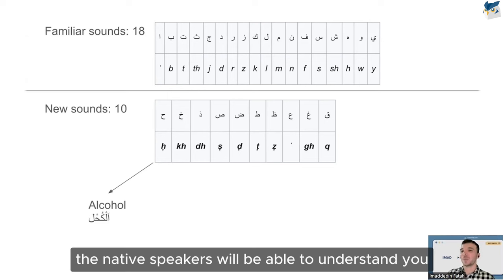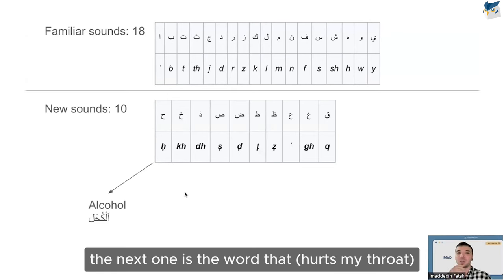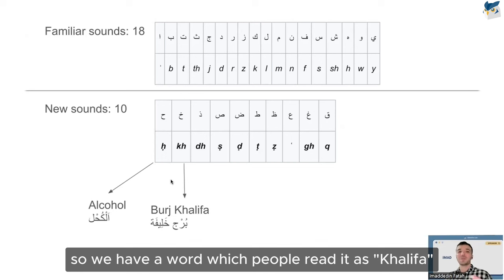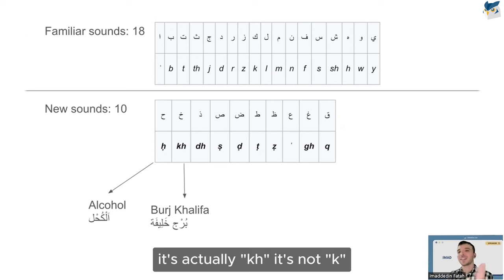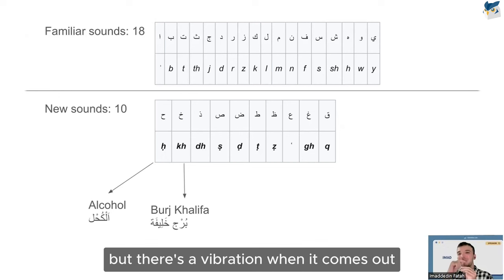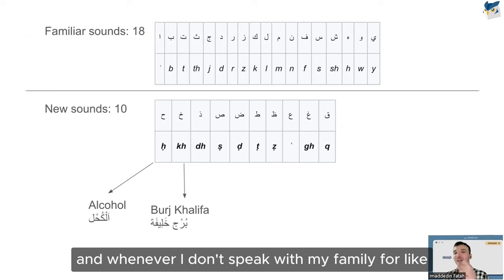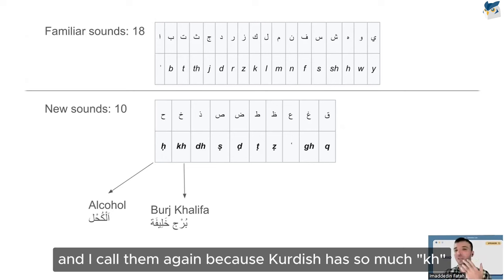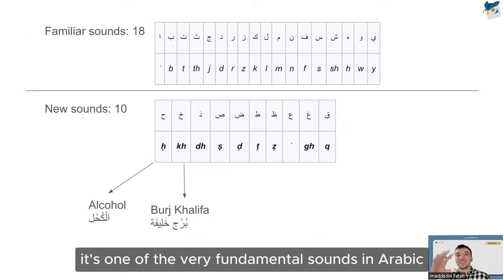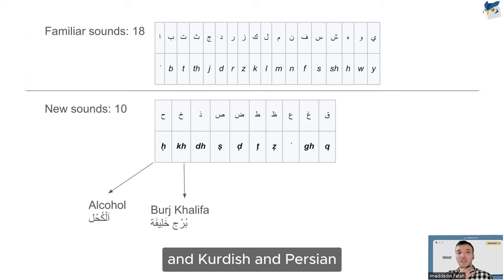The letter that gives my throat pain is 'kh' — the sound in Burj Khalifa is actually 'Khalifa': it's like a 'kh' with a vibration. Kurdish has so many of these sounds that when I haven't spoken with my family for two or three weeks and I call them, I get a sore throat — it's one of the most fundamental sounds in Arabic, Kurdish, and Persian. Then there are letters with a dot below, which are emphatic versions: for example, an emphatic 's' (ṣ), an emphatic 'd' (ḍ), and an emphatic 't' (ṭ) — all just slightly deeper versions of their plain counterparts.